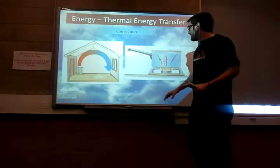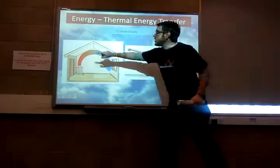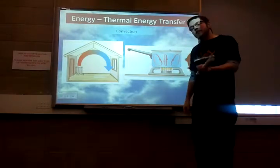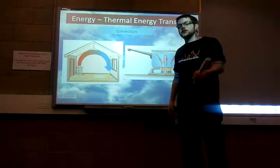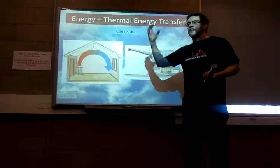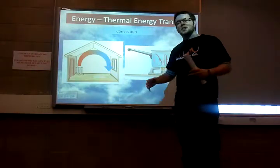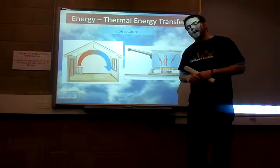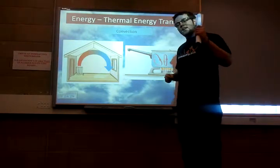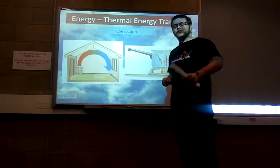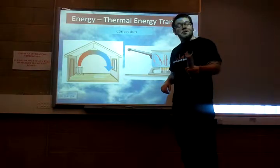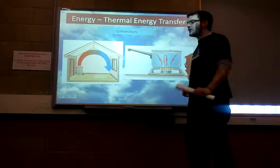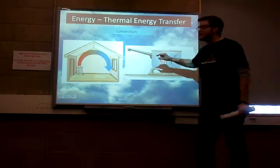This is called convection, and this circular movement is called convection currents. This is how we have wind on our planet - due to the heat from the sun and how it heats up the molecules within our air. We'll have a look at that in our next lesson on renewable resources. So that's convection.